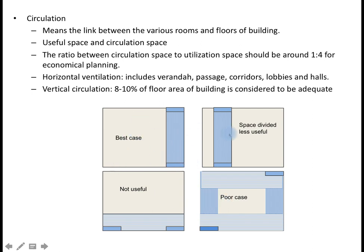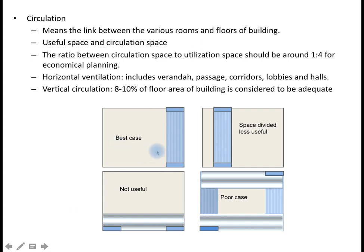From a circulation point of view, four conditions are described. When rooms are positioned opposite each other, it gives the best circulation aspect. When space is divided by a passage, it gives good circulation but is not very useful. When two doors are in the same direction, ventilation is good but practicability is poor. When doors are on opposite sides without corner placement, usable area is very less and ventilation is poor. The best case is doors provided at corners on opposite sides of the room.